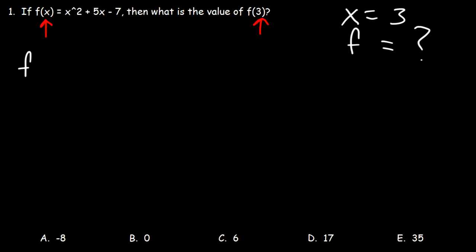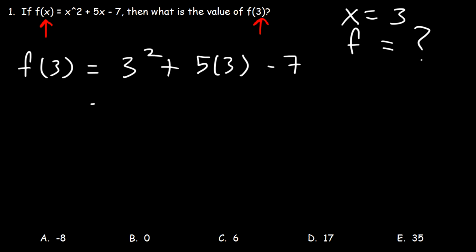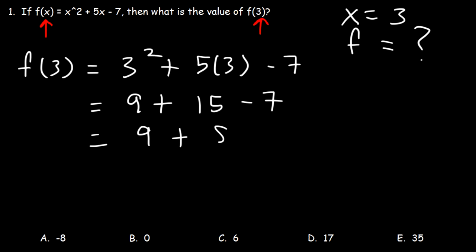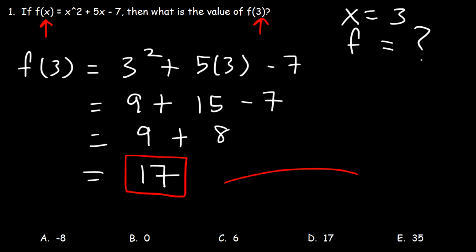All we have to do is replace x with 3. So instead of writing x squared, we write 3 squared, and instead of writing 5 times x, we write 5 times 3. 3 squared is 3 times 3, which is 9. 5 times 3 is 15. 15 minus 7 is 8, and 9 plus 8 is 17. So when x is 3, f has a value of 17 — d is the right answer.